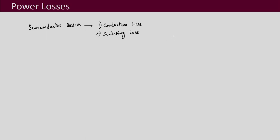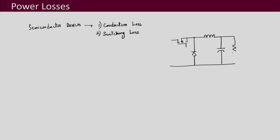Let us recall the buck converter circuit. In the buck converter you have a switch, and the semiconductor device losses will be taking place in this MOSFET and also in the diode.